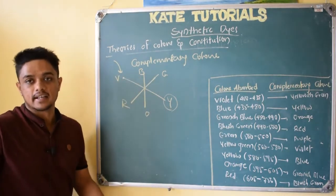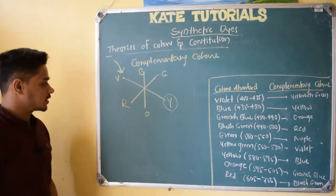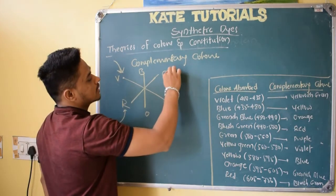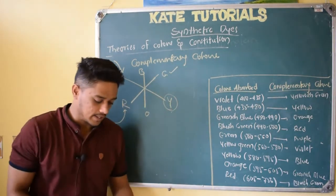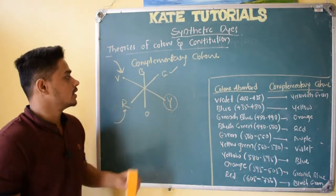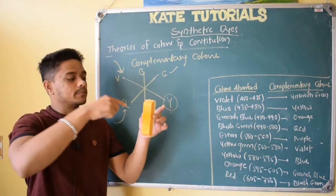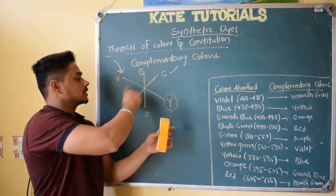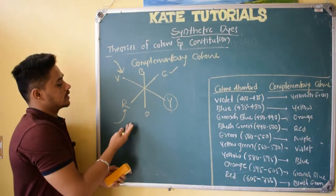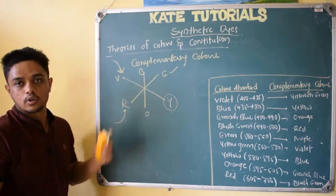So this is the complementary theory of color. A substance which absorbs violet light will appear yellow — it looks yellow for us. If a substance absorbs red light, then it should look green. If something looks yellow, it means it has absorbed violet color. Whenever radiation comes, it absorbs violet and gives the complementary color which looks yellow. Similarly, if it absorbs red, it appears green. A substance which looks green will absorb red color because both are complementary.